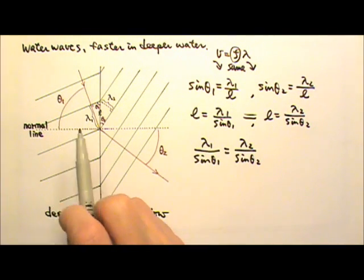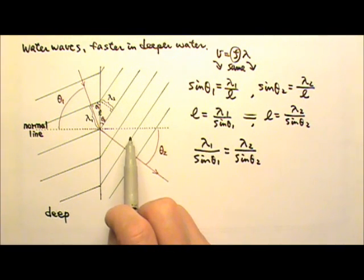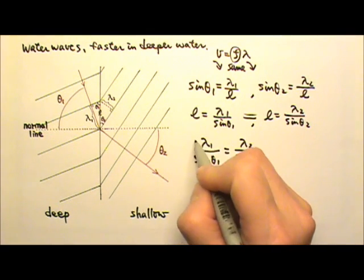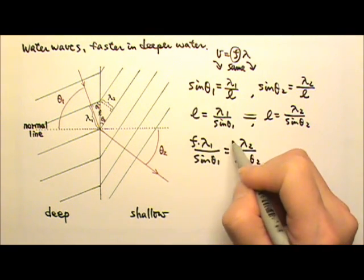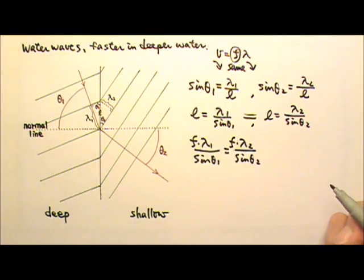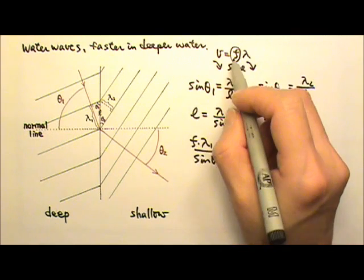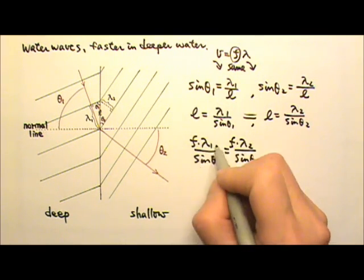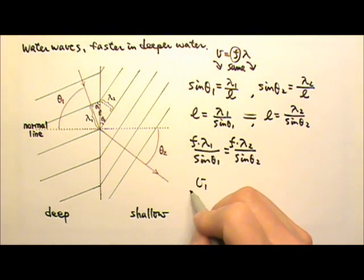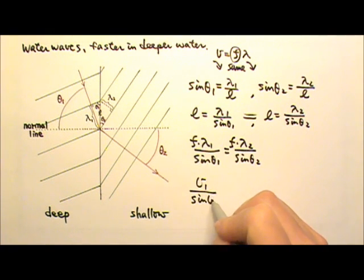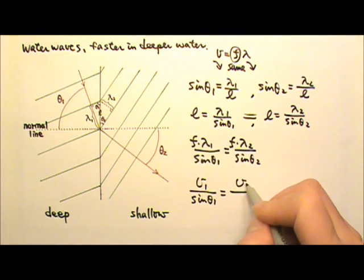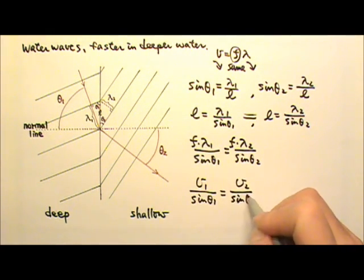And because before and after refraction, the frequency is the same, that means I can multiply by frequency on both sides, and the equation will still be equal. And what is frequency times lambda? That's the speed. So this would be speed 1 divided by sine theta 1 equals speed 2 divided by sine theta 2.